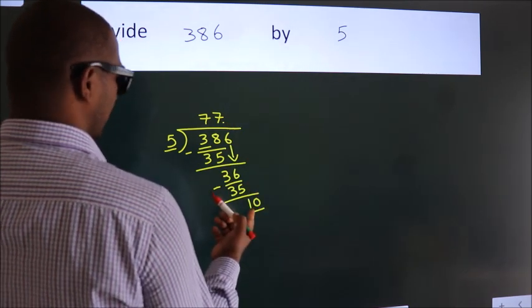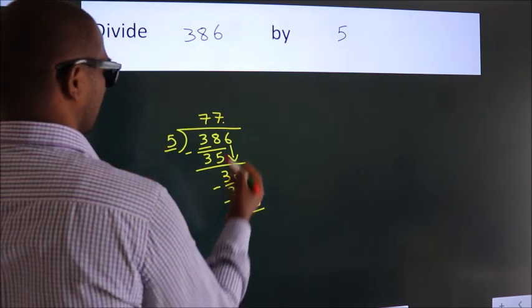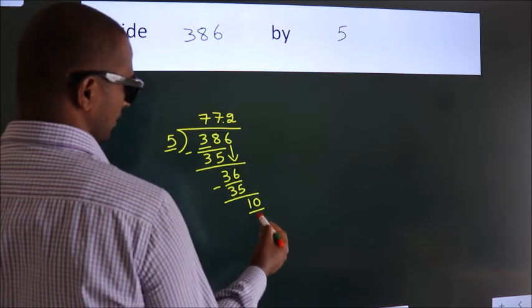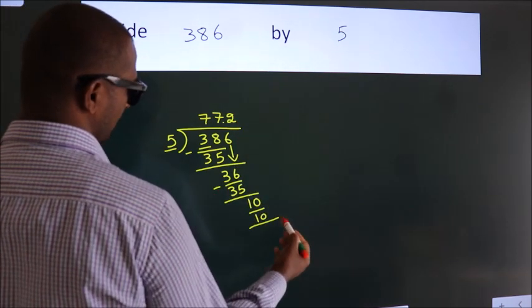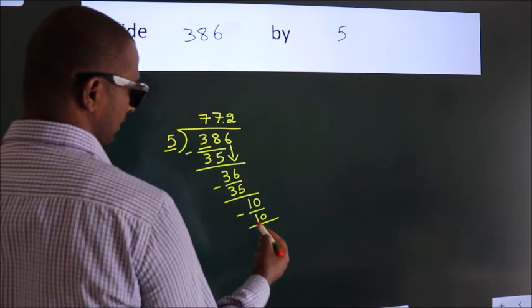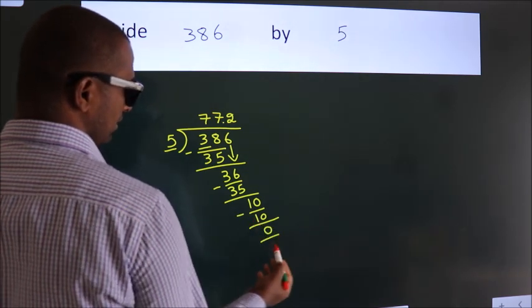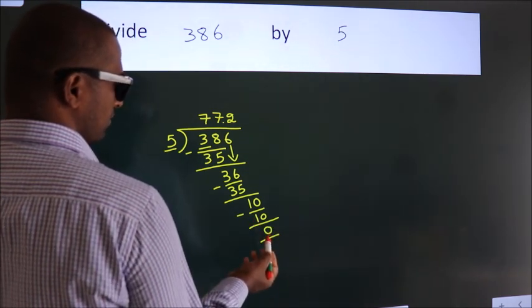When do we get 10 in the 5 table? 5 times 2 equals 10. Now, we subtract. We get 0. We got remainder 0.